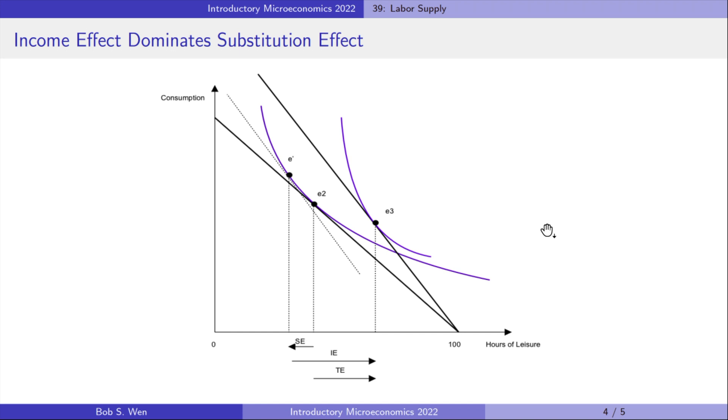We assume that the hourly wage continues to rise. As shown in the graph, the income effect of a wage increase is much greater than the substitution effect. That is to say, Amy becomes so rich that she would like to enjoy a lot of leisure time and just needs to work for a short time.